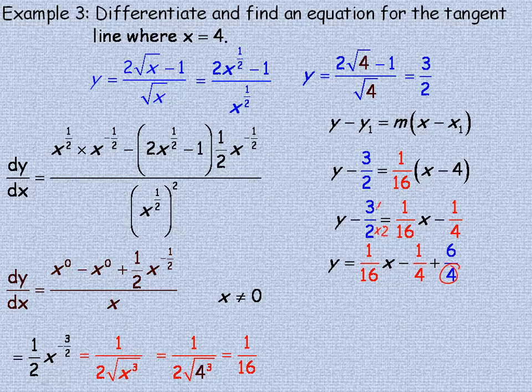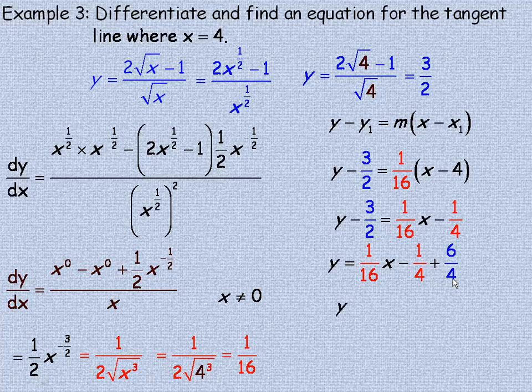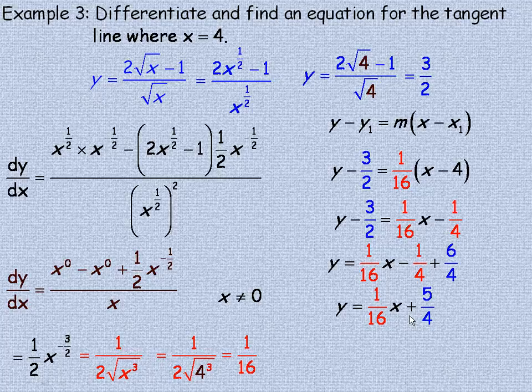Because if I multiply the bottom by 2, that's where that 4 comes from. Multiplying the top by 2, that's where the 6 comes from. So 3 halves, same as 6 quarters. So negative 1 quarter and 6 quarters of course is 5 quarters. So y equals 1/16 x plus 5/4 is the equation of our tangent line.